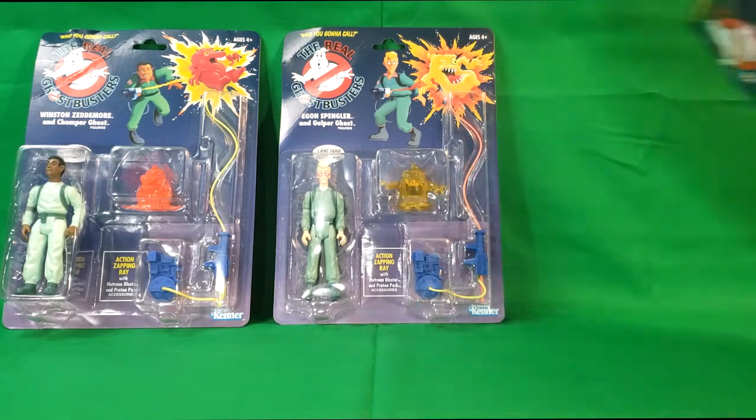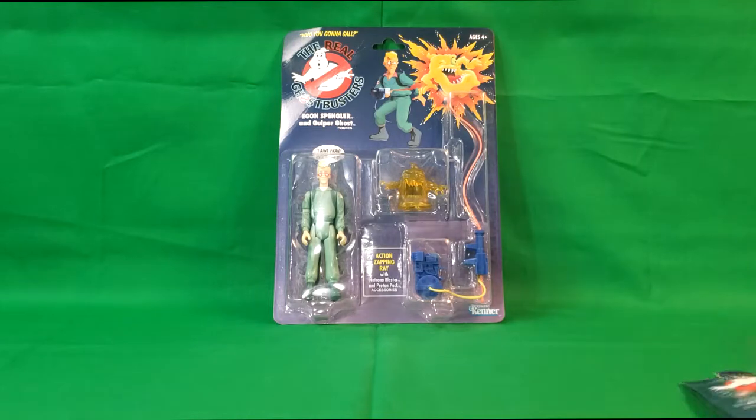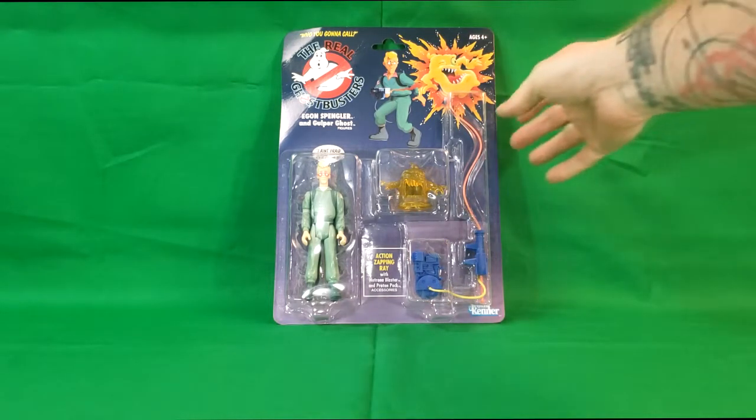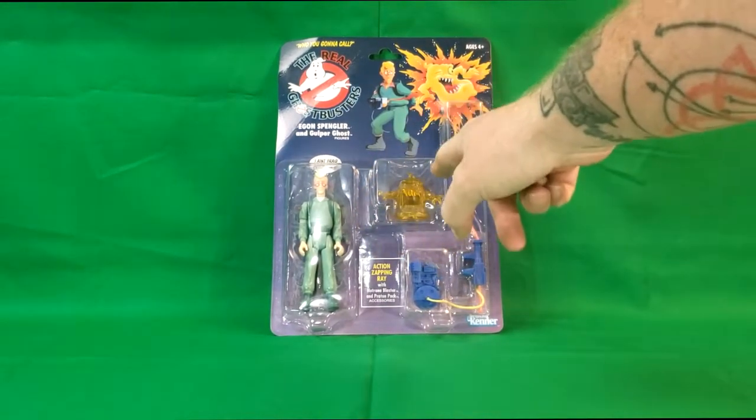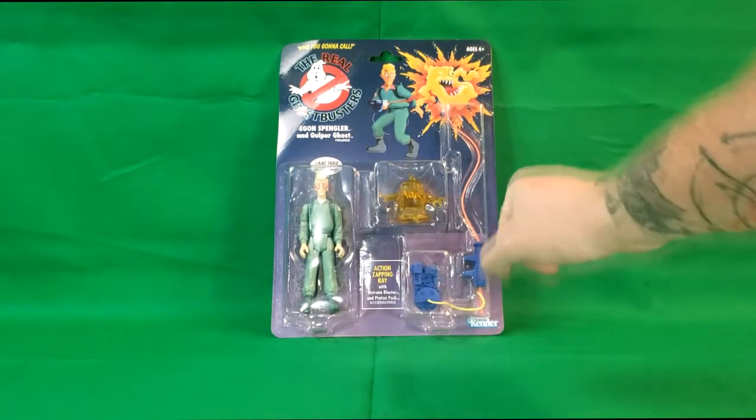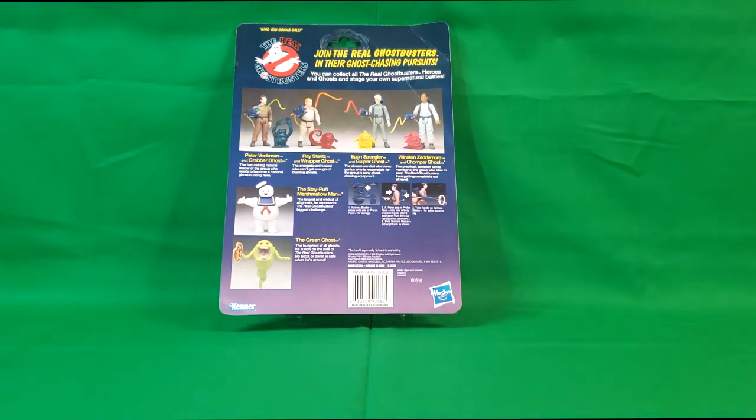So let's go ahead and take a look at the packaging. We'll start with Egon. As you can see, they've got the Real Ghostbusters no-ghost logo up top. Who are you going to call? Ages four and up. You got Egon there blasting the ghost and he's saying, I ain't afraid of no ghost. Action zapping Ray with Neutrona Blaster and Proton Pack accessories from Kenner. So you've got Egon here, the Gulper Ghost, and his Proton Pack and Neutrona Wand.